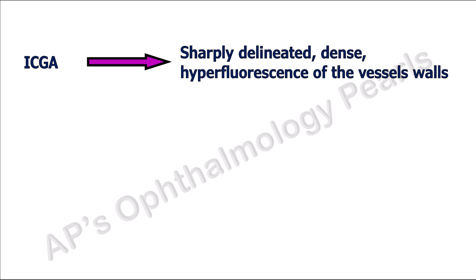Indocyanine green angiography shows sharply delineated dense hyperfluorescence of the vessel walls in both early and late stages. This is due to staining of the inflammatory proteins which constitute the plaques with indocyanine green. Indocyanine green staining is absent in the candle wax drippings of sarcoidosis and frosted branch angiitis, as the pathology in these two conditions is outside the vessels and hence there is no contact of the dye with the inflamed proteins.